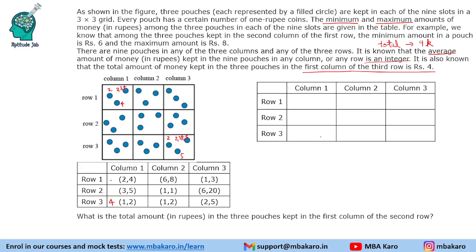The total is given as 4. How can we get a total of 4? That is 1, 1, and 2 — that is the only way. The lowest and highest are given. Now we look at slots where the lowest and highest are known: for 3 and 5 a number comes in between; for 6 and 8 a number comes in between; and for 1 and 1 it is obviously 1, 1, 1. For 1 and 2, a number comes in between.